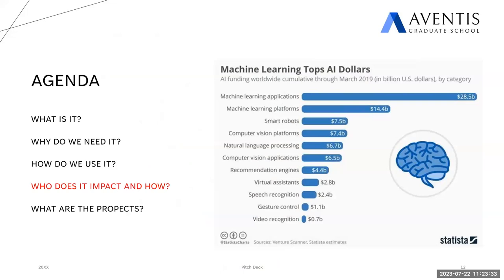AI — machine learning and deep learning — has a lot of applications. ChatGPT is the biggest news, and there are articles about people losing jobs because of it. AI does have potential to automate things, but it's also accelerating new business ideas and making things faster, cheaper, and more effective. There's a saying: your job won't be replaced by AI — it will be replaced by the person who knows how to work with AI tools. Singapore is taking this trend seriously.